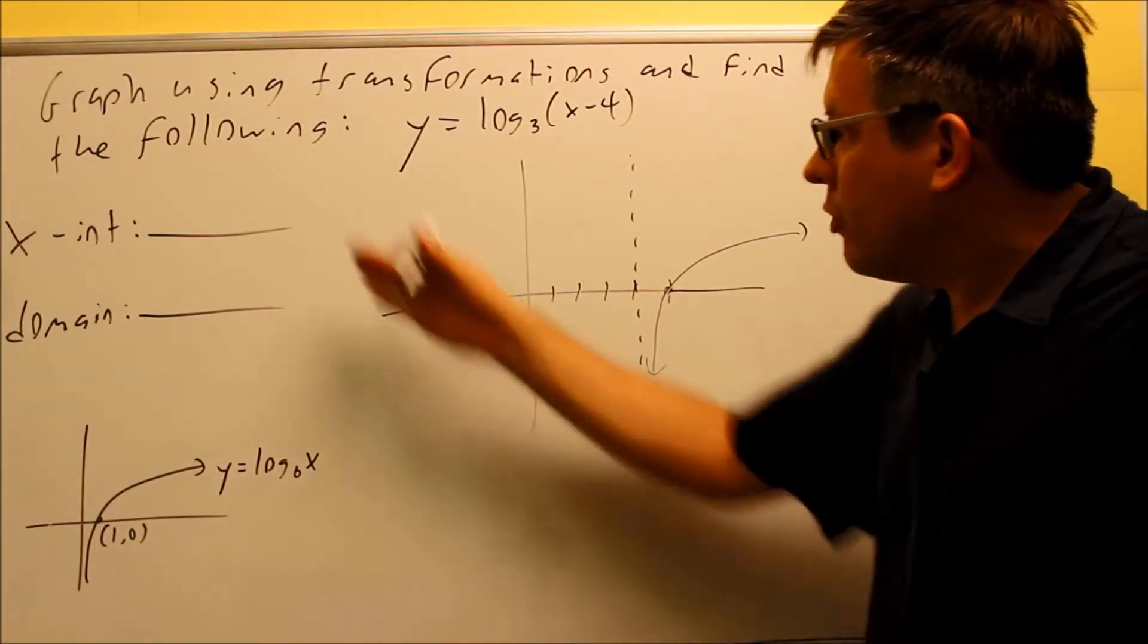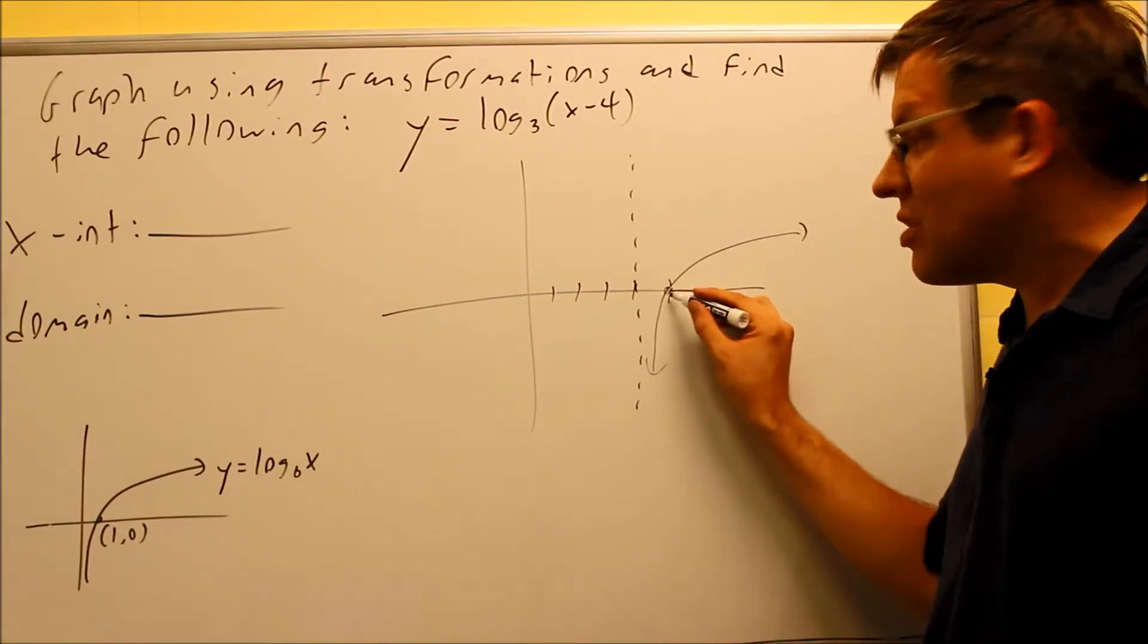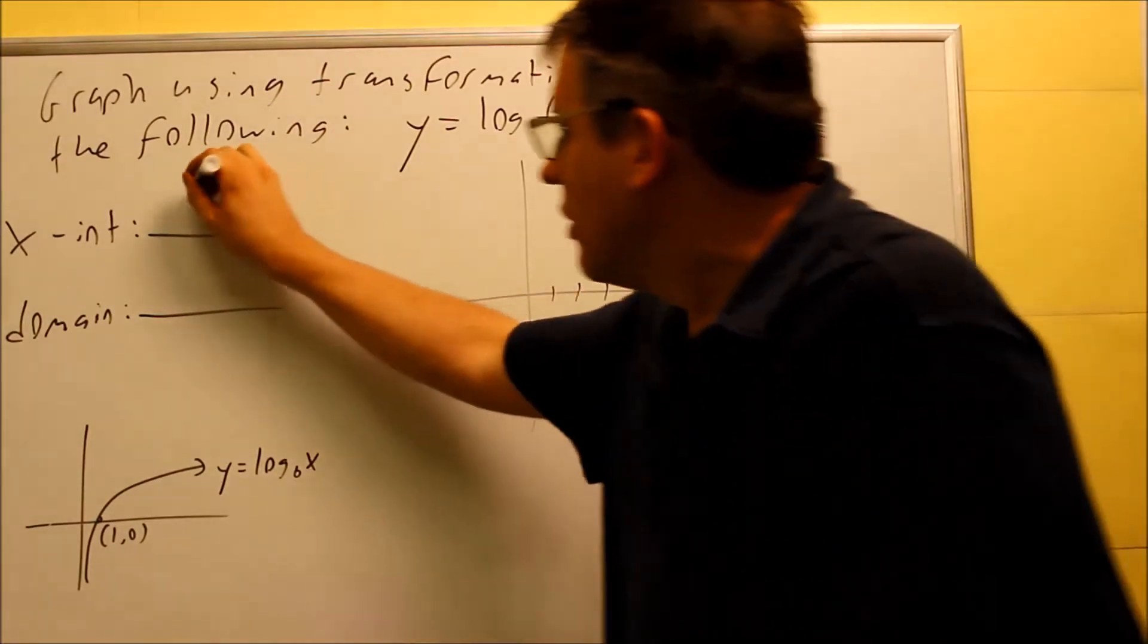So now that we have the graph complete, we're going to answer the two questions. The x-intercept is where it crosses the x-axis. That's going to cross at five.